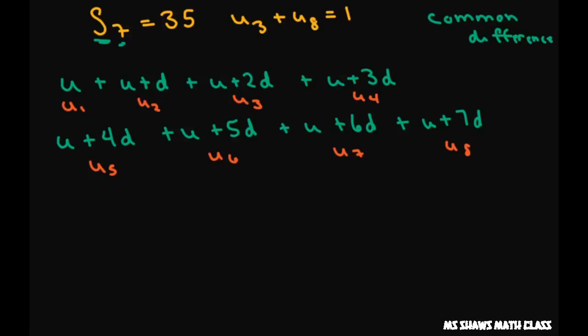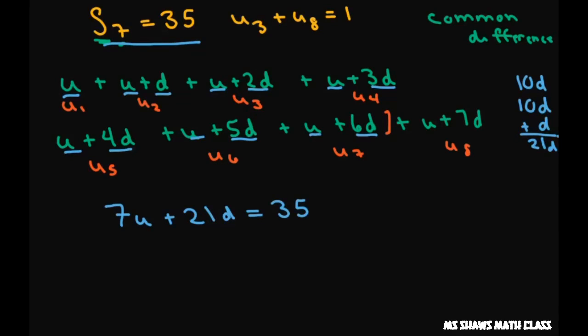So we know the first seven terms which would be going through to this is 35. So let's add all those up. So we have one, two, three, four, five, six, seven U's and D's. I've got six here and four. So that's ten D's. I have five plus two plus three. That's a five plus five. It's another ten D plus I have this D. So that's a total of 21 D's. So 7U plus 21D equals 35 because your first seven terms equals 35.